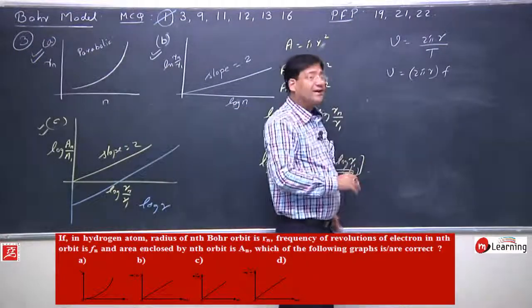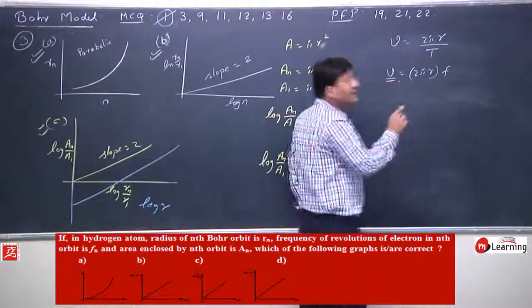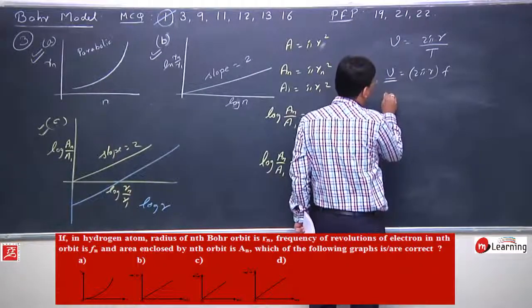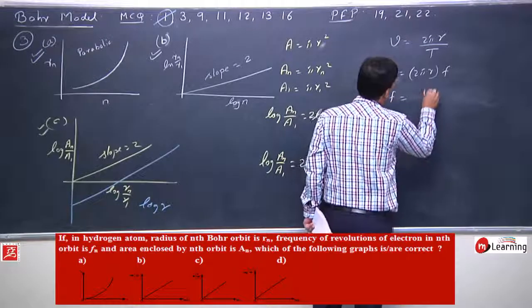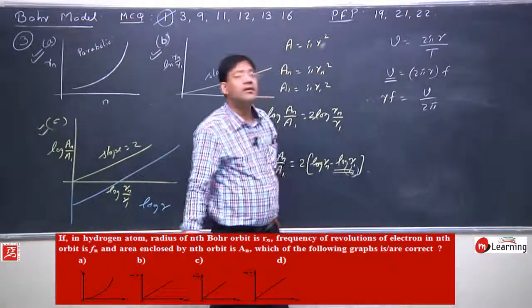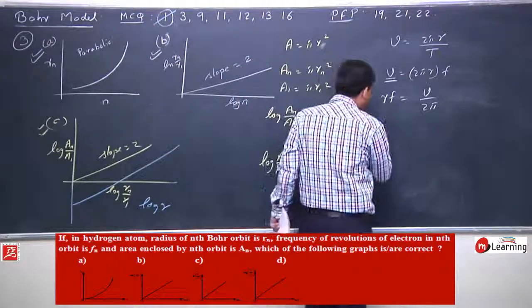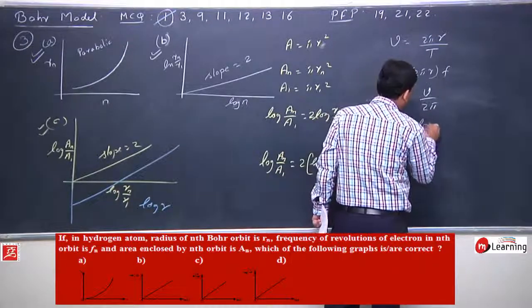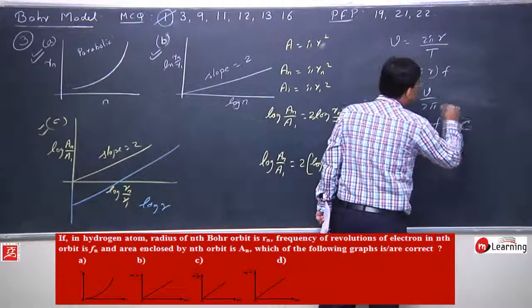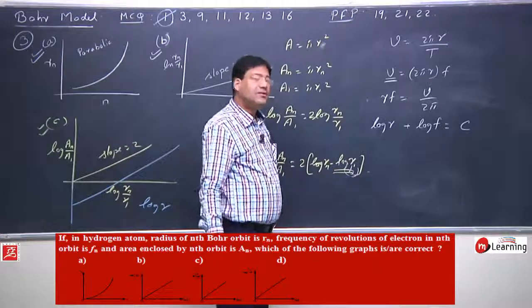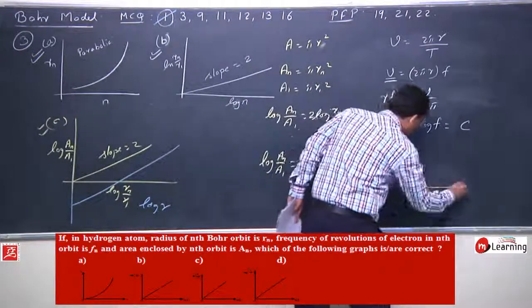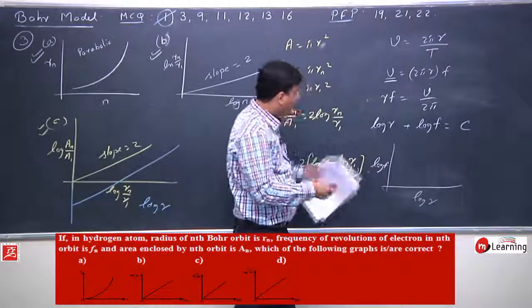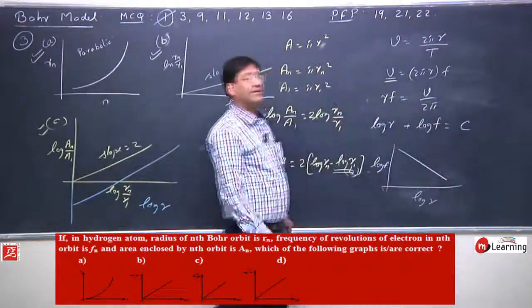Velocity is 2.18 times z by n. So 2.18 z by n equals 2 pi times 0.53 n squared by z times frequency. In this situation, velocity in any orbit would become constant, so r into f equals v upon 2 pi.